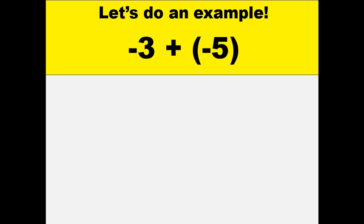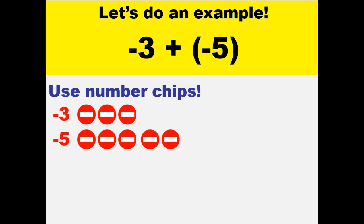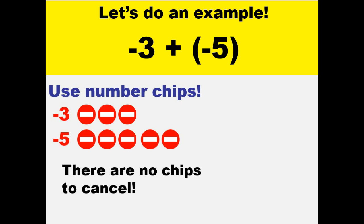What if we have two negatives? We have negative 3 plus negative 5. Using the number chips, we have 3 negative chips and 5 negative chips. Since there are no chips to be cancelled, we just count all the chips. The final answer is 8 negative chips, which is equal to negative 8.